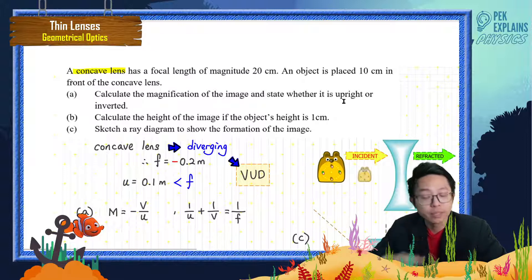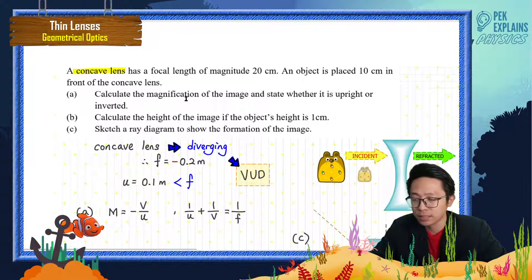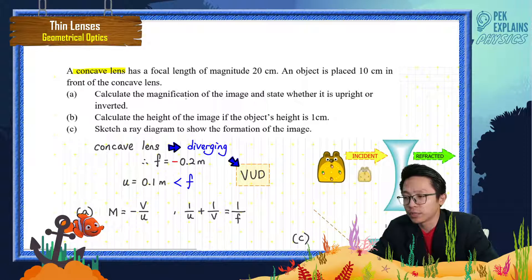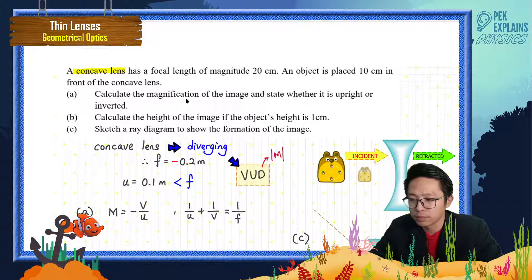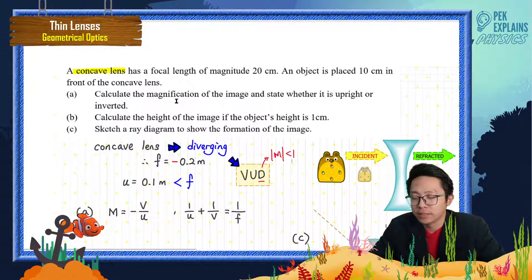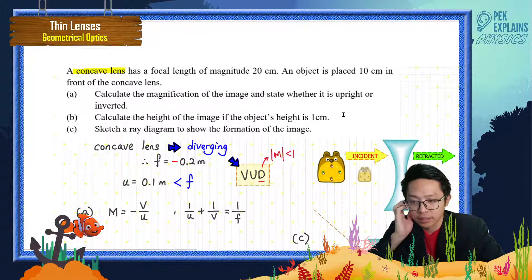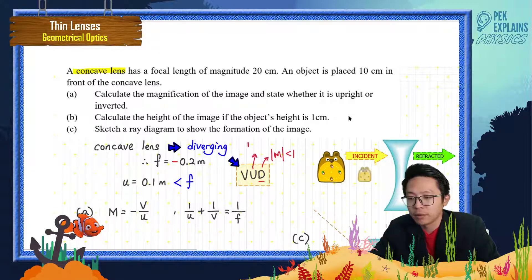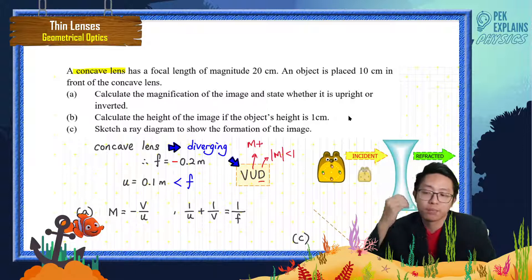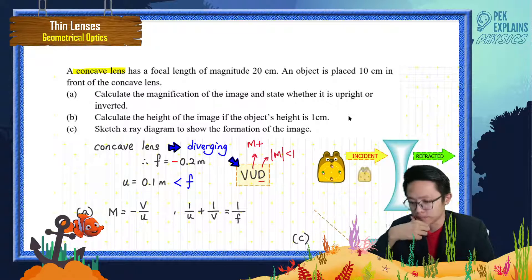The image is diminished, so the magnitude of magnification must be less than one. And because it is upright, the magnification must be positive. So we expect a positive value less than one.